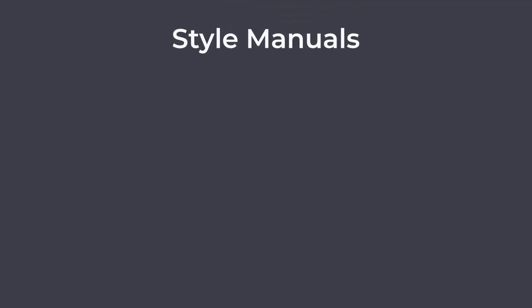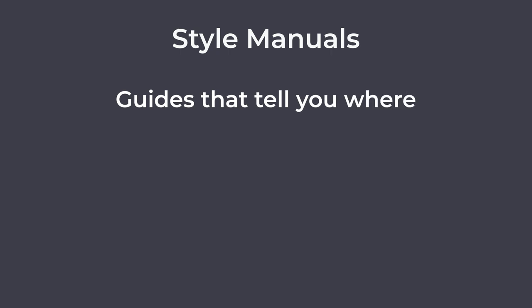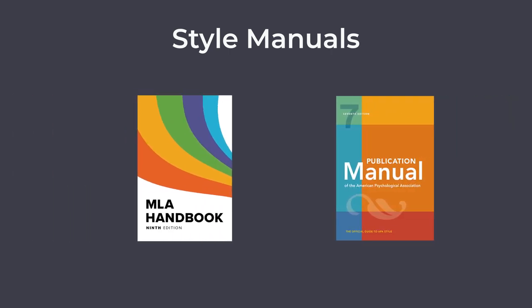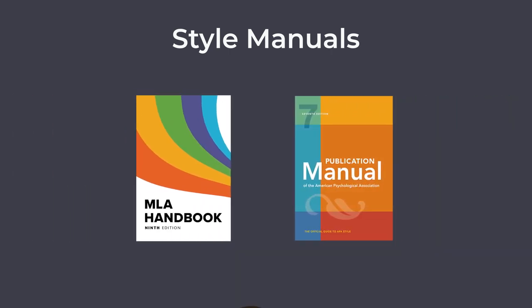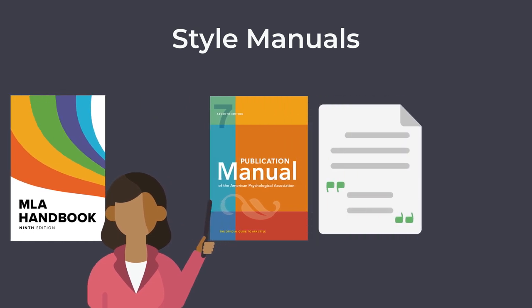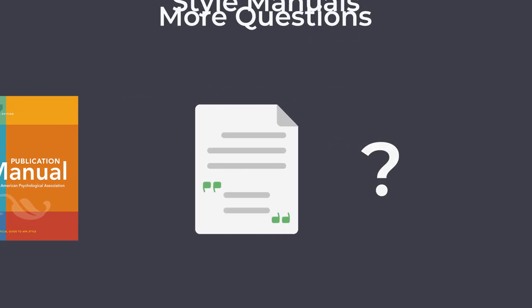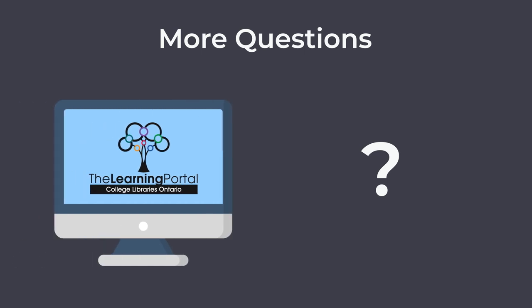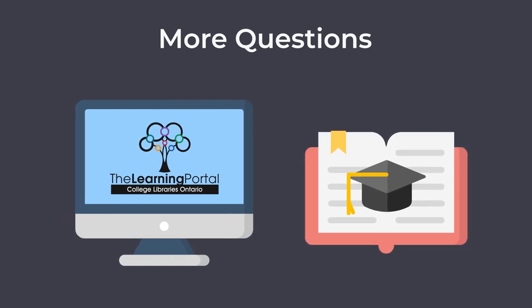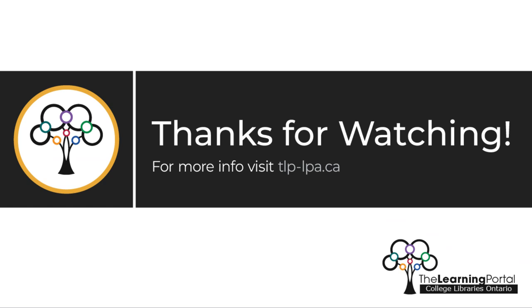Style manuals and more help. Style manuals are guides that tell you where and how to properly cite your sources. There are several different style manuals — for example, MLA or APA. Always ask your instructor which citation style to use on your assignments. Have more questions about incorporating sources? Explore the learning portal or contact a librarian at your college library. Happy citing!